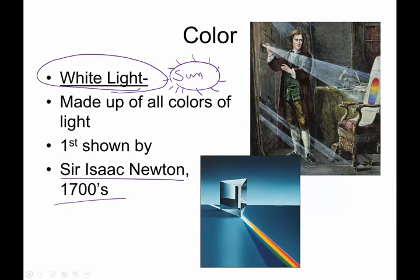So prior to Newton, people thought that white light was pure, that white light was actually pure, and that each one of the colors was an impurity.